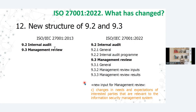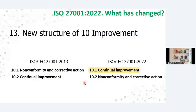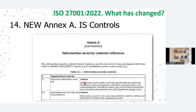Then in clause number 9 itself, an additional point is added in 9.3: changes in needs and expectations of interested parties. Then in clause number 10, the only change is that the order is being shuffled. Earlier, continual improvement was clause number 10.2 — now it has been made 10.1, and the earlier 10.1 is now made 10.2. So these are the changes that have been made in the ISMS framework right from clause 4 to 10.